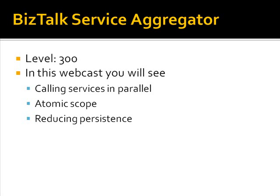What we're going to be looking at is using the parallel action shape to actually call orchestrations in parallel, using the atomic scope and reducing persistence in the actual orchestration. It's based on the previous service aggregator orchestration, so if you want to get a view on what's happening in the actual design — the first orchestration design — then check out the service aggregator orchestration.